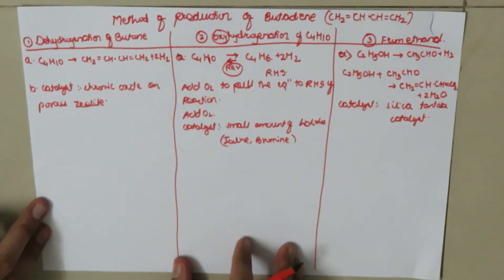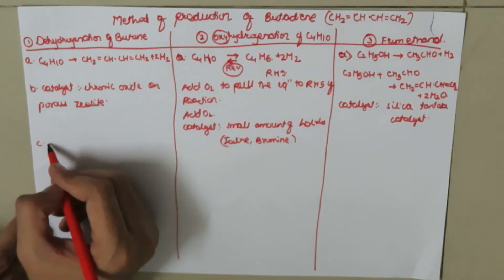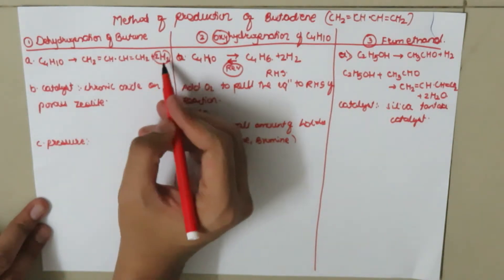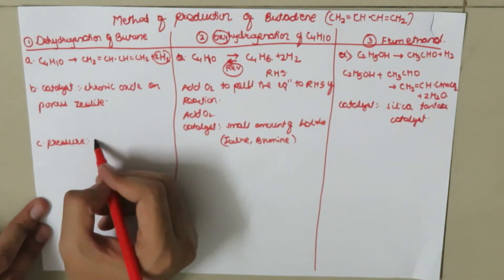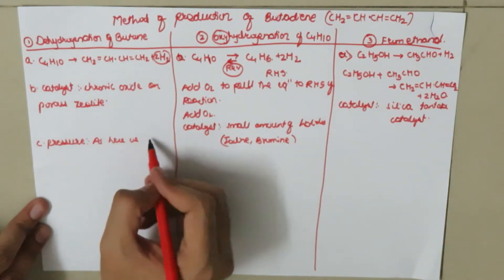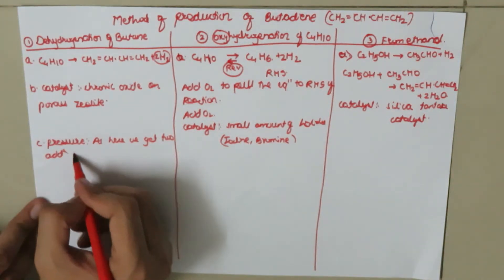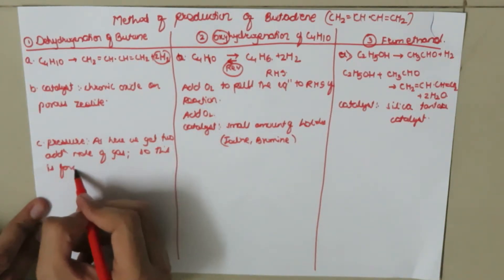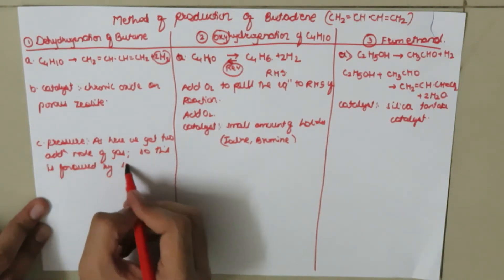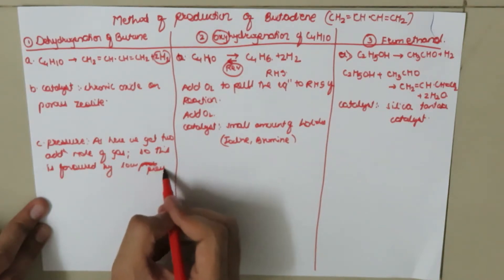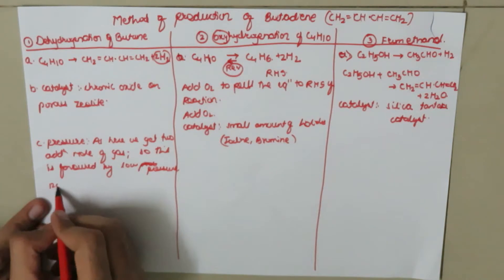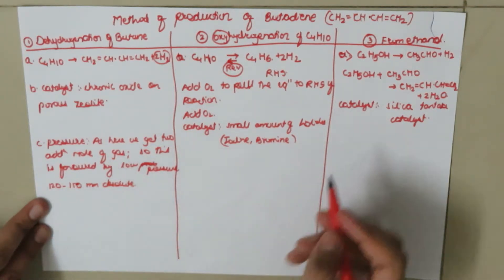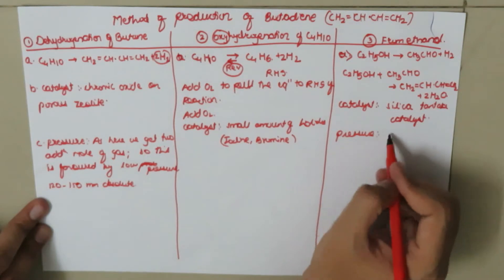Now we are going to talk about the pressure. The third point of differentiation is pressure. In this case, as we get two additional moles of H2, that is two additional moles of gas, this is favored by low pressure. The pressure is maintained about 120 to 150 mm absolute. The pressure in this process is kept around 1 atmosphere.